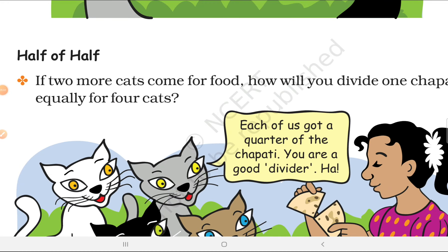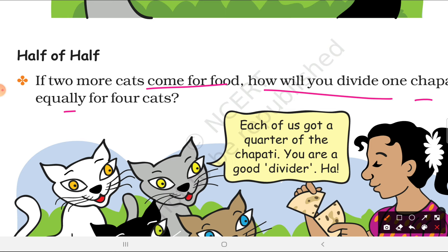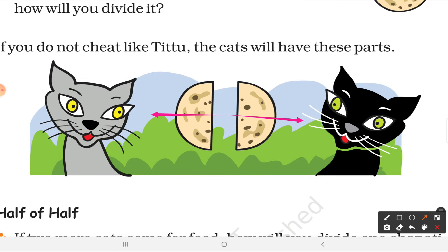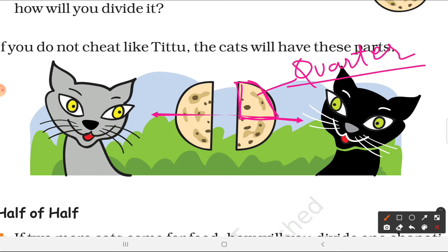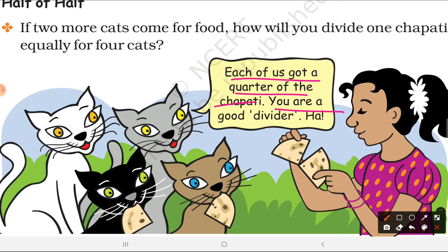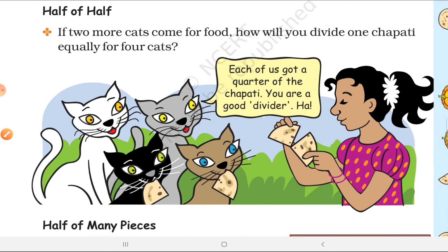What is the half of half? If 2 more cats come for food, how will you divide 1 chapati equally among all 4? You can take each half and halve it again. Half of half is known as a quarter. So each of the four gets a quarter of the chapati — you are a good divider!